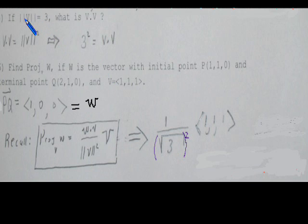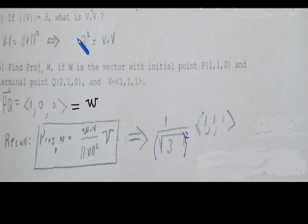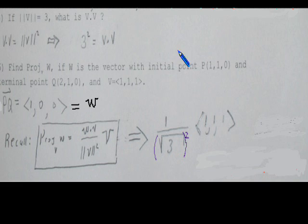The next problem: the norm of v equals 3, and they ask what is v dot v. We recall that v dot v equals the norm of v squared. Since the norm of v equals 3, this immediately gives us v dot v equals 3 squared, which equals 9.